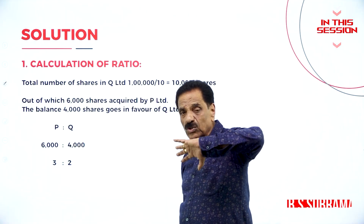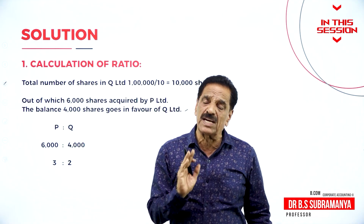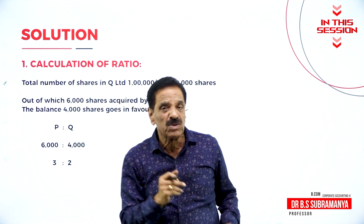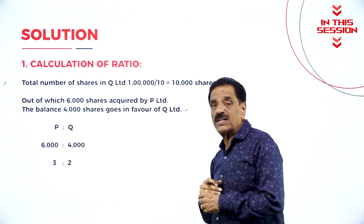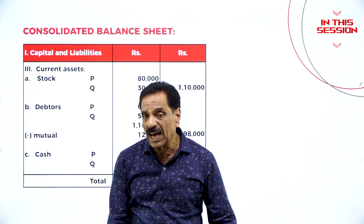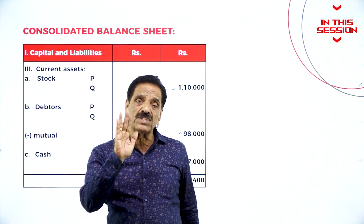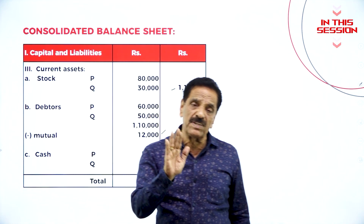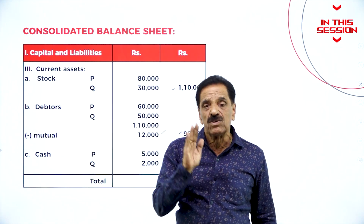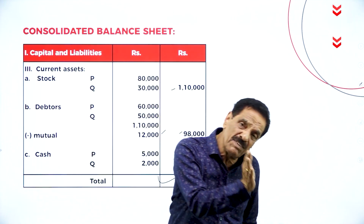So what is the total number of shares we are having? 10,000 shares, out of which 6,000 shares are acquired by P-Limited. The balance shares go to subsidiary minority. While calculating the balance sheet, you have to take the profit of the holding company as revenue profit and the reserve of the holding company as revenue reserve.